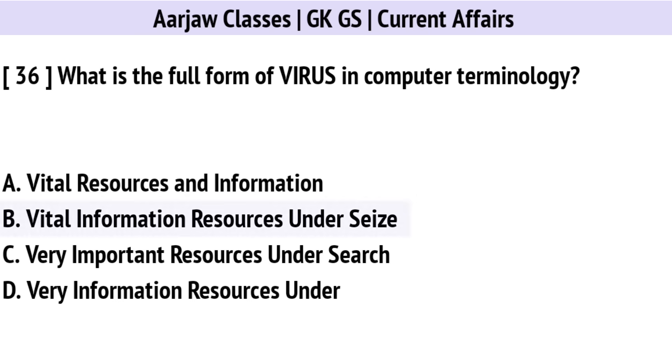What is the full form of virus in computer terminology? The correct option is B: Vital Information Resources Under Siege.